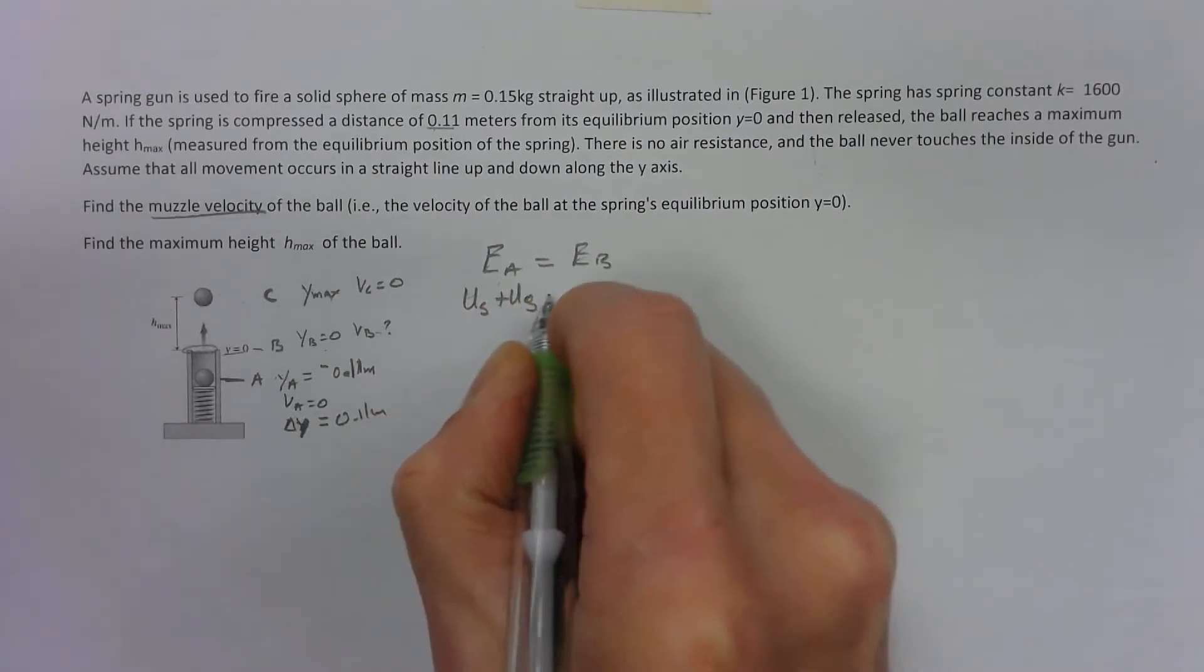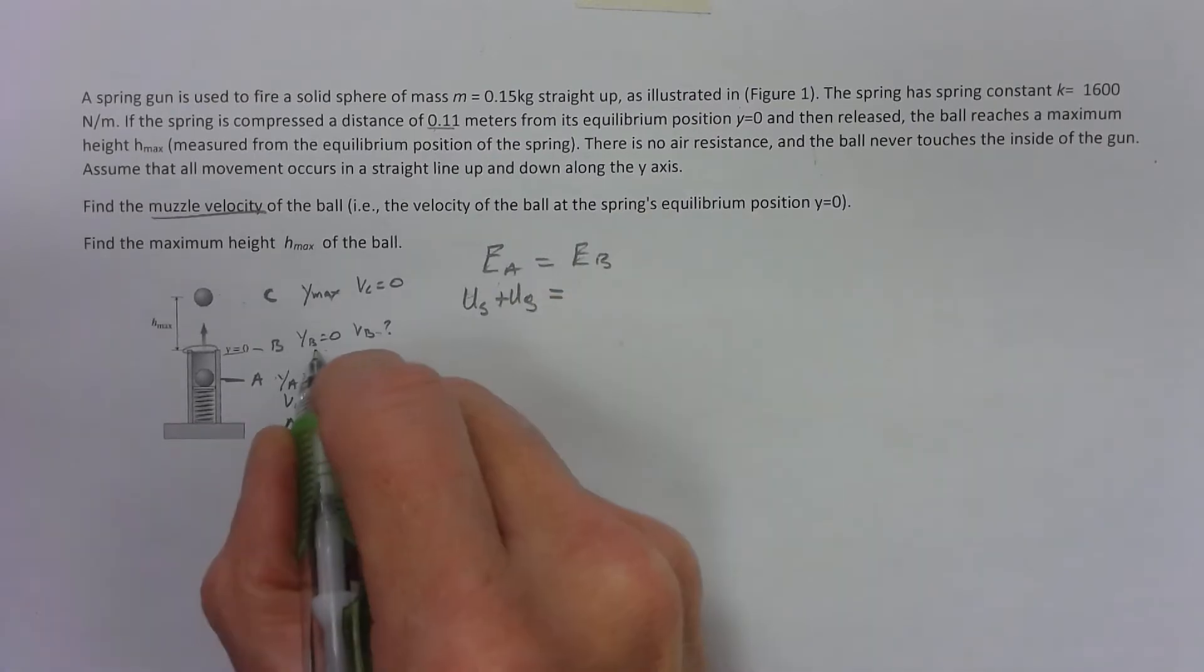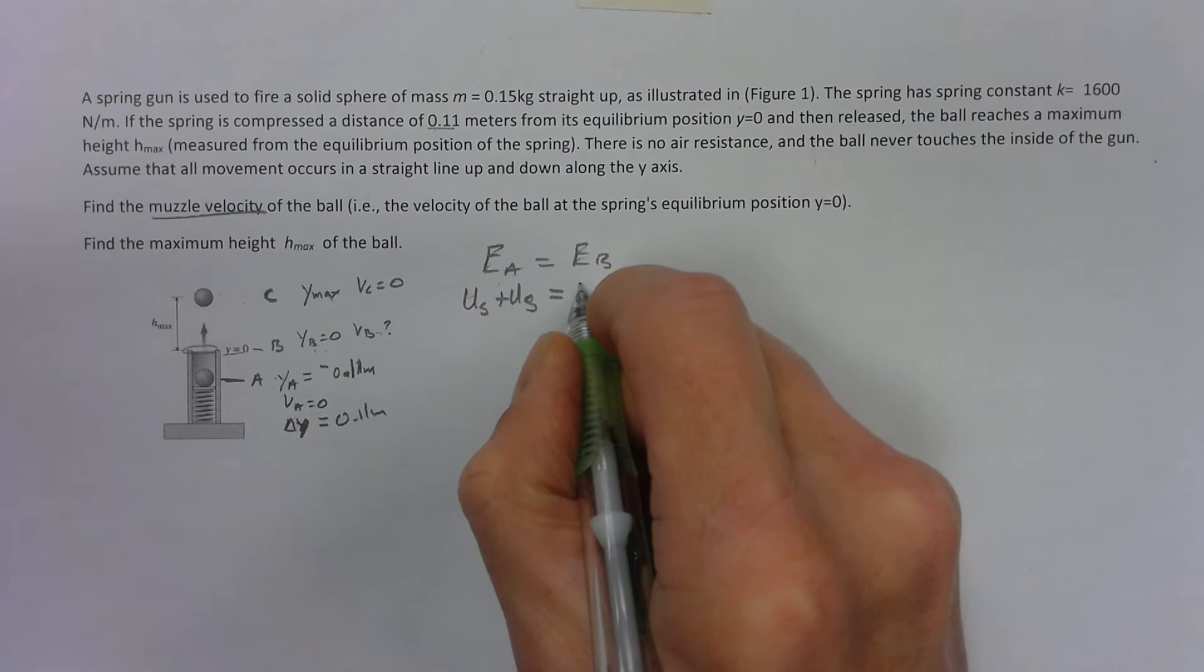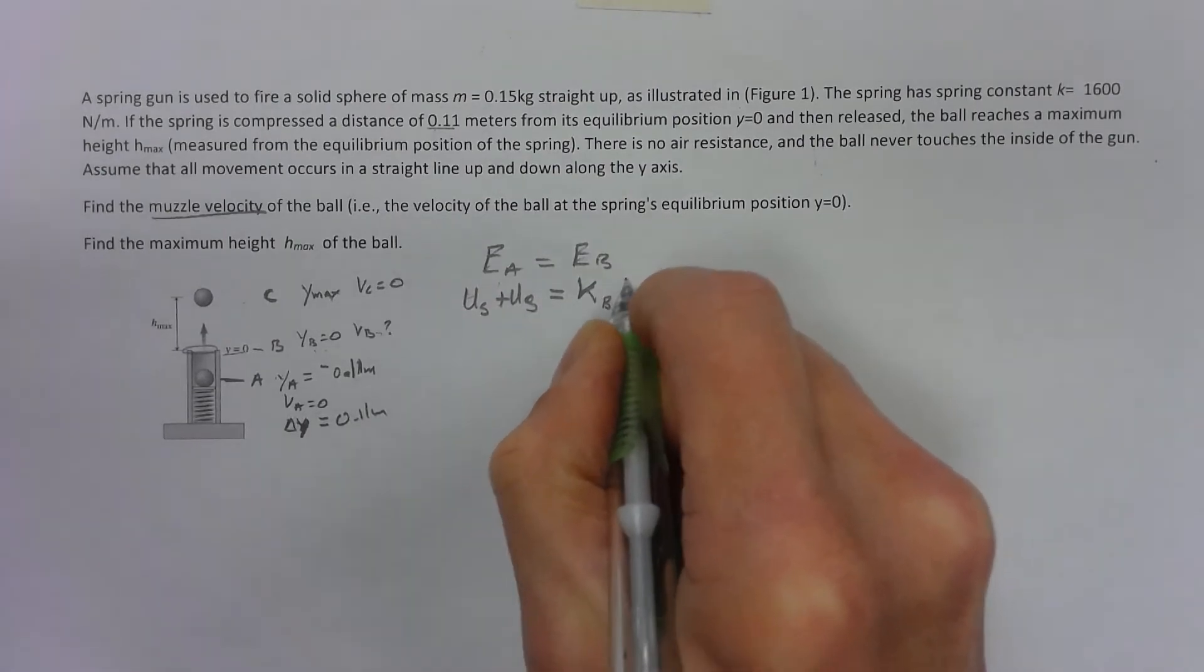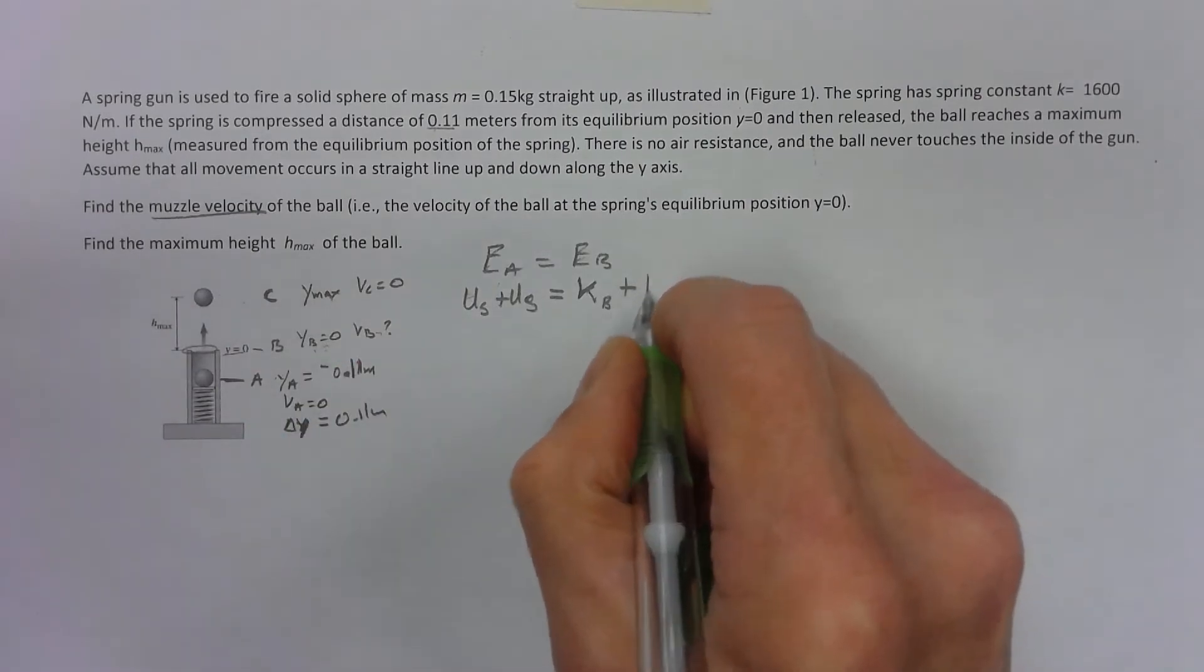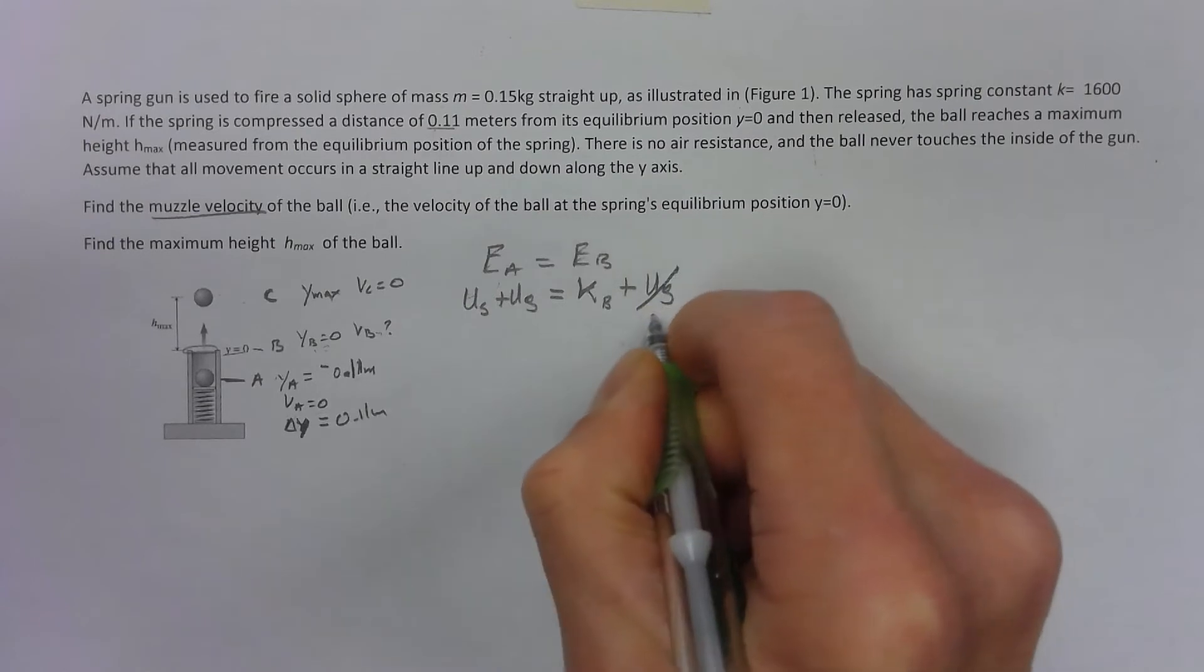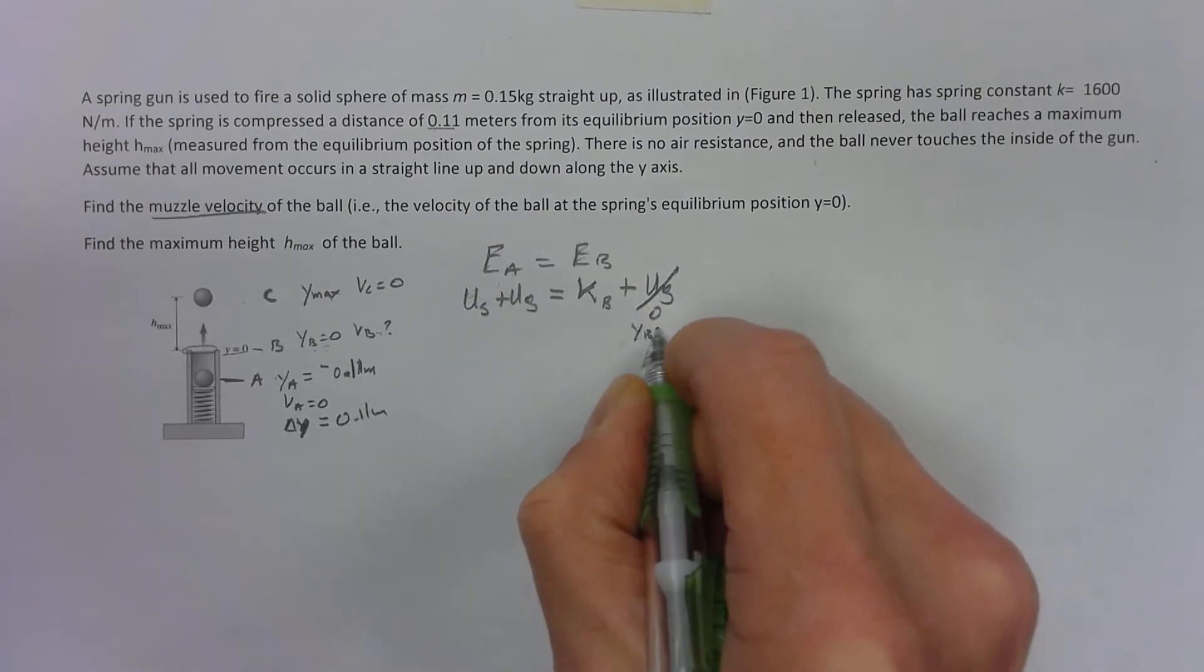At b it's moving, I've got kinetic. There's no height so the gravitational energy is going to be zero because y at b equals zero.